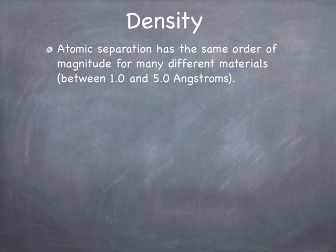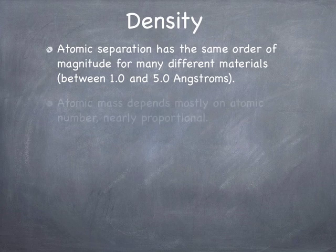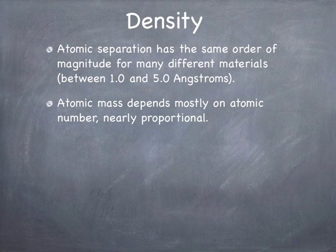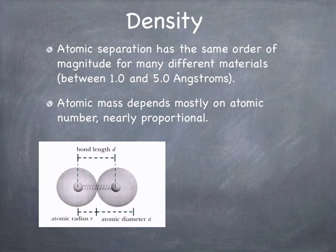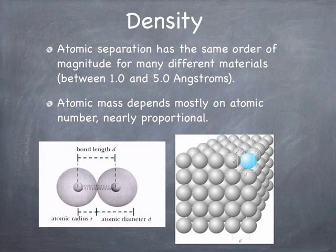Let's talk about density. Density is the amount of mass per unit volume in a material. If the atomic separation is about the same for different kinds of materials, and the atomic mass is basically proportional to the atomic number, we can develop a connection between the microscopic properties — the distance between atoms and the amount of matter in the atoms — to macroscopic properties you can measure easily in the laboratory, like density. The mass enclosed in that little cube is the mass of a single atom, and the volume associated with that atom is simply the cubic distance between neighboring atoms.